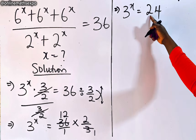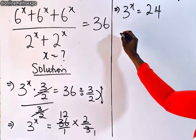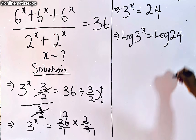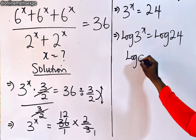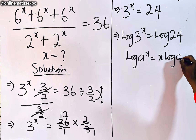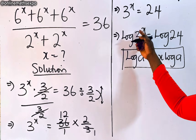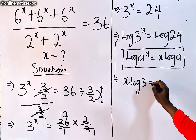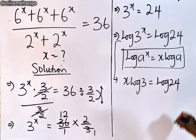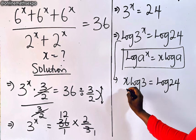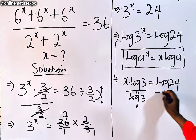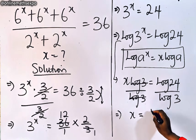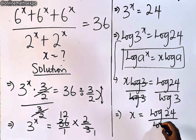Now at this point, can we express 24 as a power of 3? It's not possible. So we're going to take the log of both sides: log of 3 to the x-power equals log of 24. Remember that log of a to the x-power equals x log a. Applying this rule gives us x log 3 equals log of 24. Dividing both sides by log 3, we now have x equals log 24 divided by log 3.